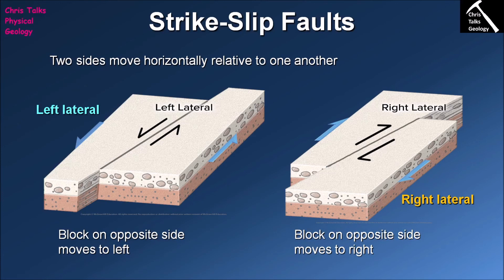In summary, there are two general types of faults: strike-slip faults and dip-slip faults. For dip-slip faults we have three different types: normal faults, reverse faults, and thrust faults. For strike-slip faults we have two types: left lateral and right lateral. Thank you for watching everybody, and have a good day.